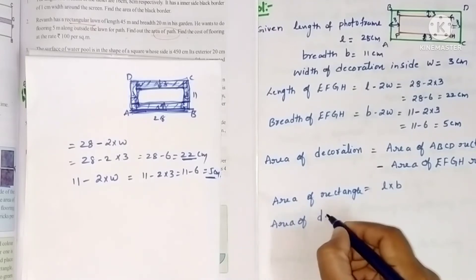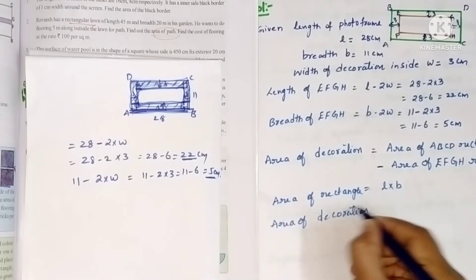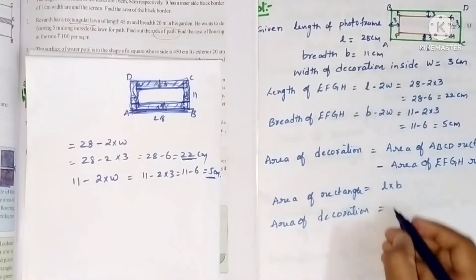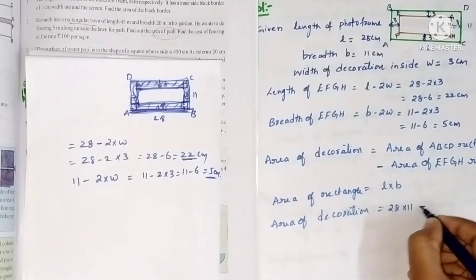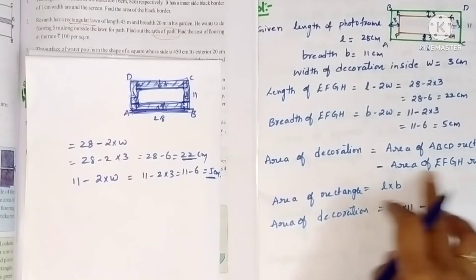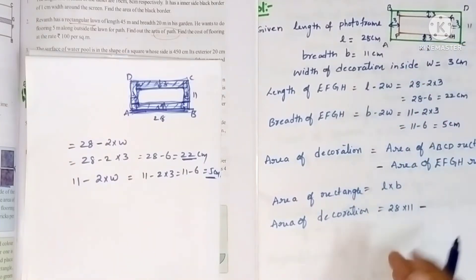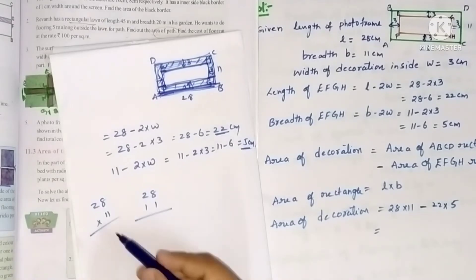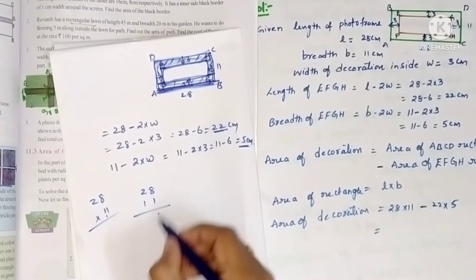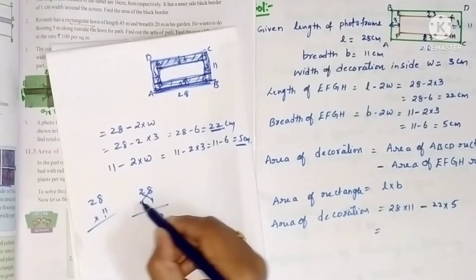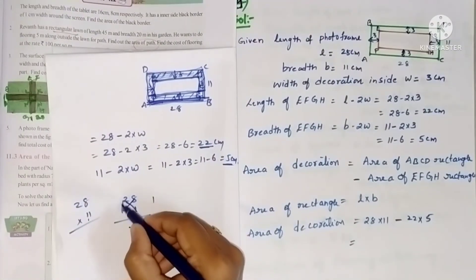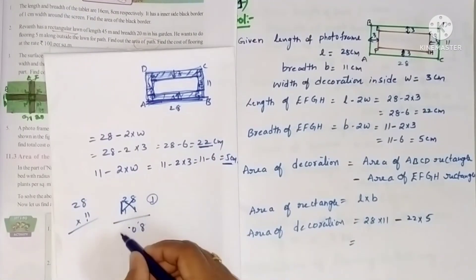Area of ABCD rectangle minus area of EFGH. ABCD means it is 28 and it is 11. So 28 into 11 minus area of EFGH. EFGH length 22, breadth 5. So 28 into 11. You can multiply in that way or in this way also. 8, 2, 8. 8 plus 2, 10. So now these 2. 2 ones are 2 plus 1, 3.